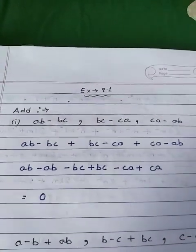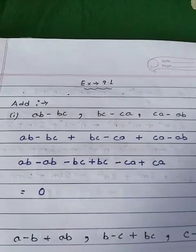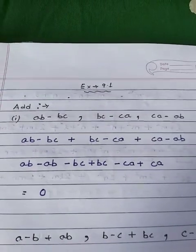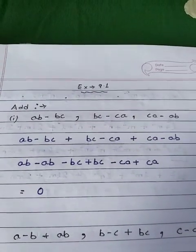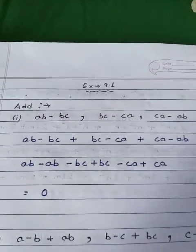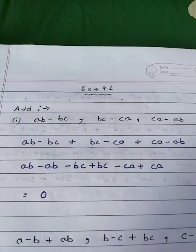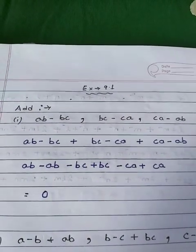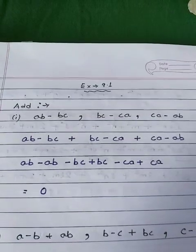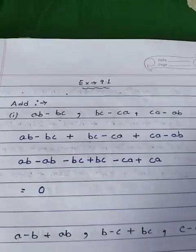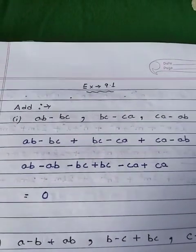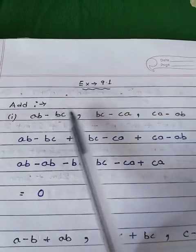So what is a like term? A like term is a term which shares the same variable and powers. The coefficient does not need to be similar, but the variables and the powers should be the same.